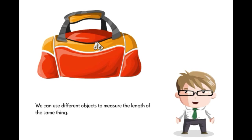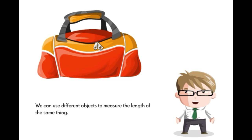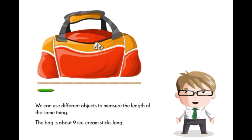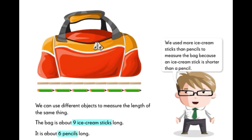Now let's measure the length of this bag. We can use different objects to measure the length of the same thing. First, let's use ice cream sticks to measure the bag. One, two, three, four, five, six, seven, eight, nine. The bag is about nine ice cream sticks long. Now let's measure the length of the bag with a pencil. One, two, three, four, five, six. It's about six pencils long. We use more ice cream sticks than pencils to measure the bag because an ice cream stick is shorter than a pencil.